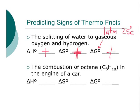Let's take a look at the second reaction, the combustion of octane in the engine of a car. Again, I'm going to leave it to you to write the balanced reaction for octane plus oxygen to make carbon dioxide and water. And again, what you'll see is that there will be more product moles of gas than there are reactant moles of gas. So the delta S here is going to be positive.